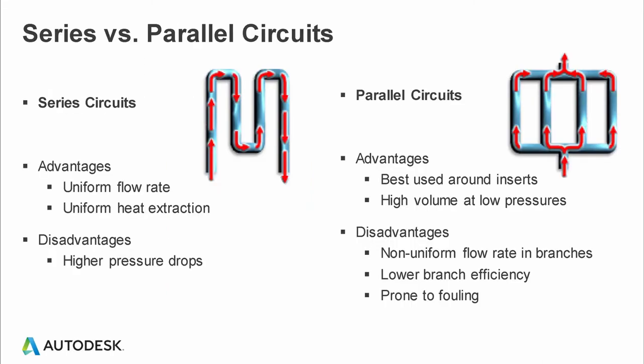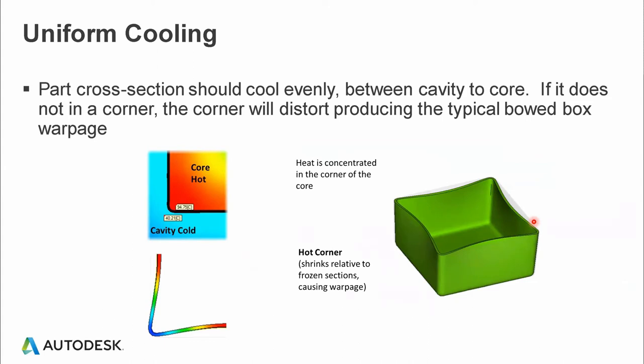Series versus parallel circuits both have advantages and disadvantages. For a series circuit, the advantages are uniform flow rate and uniform heat extraction, but the disadvantage is the potential for high pressure drop. For parallel circuits, the advantage is lower pressure drop compared to series, and it's best used around inserts. The disadvantage is non-uniform flow rate within the branches — a single flow rate gets divided among branches depending on pressure drop — so each branch shows different cooling efficiencies.